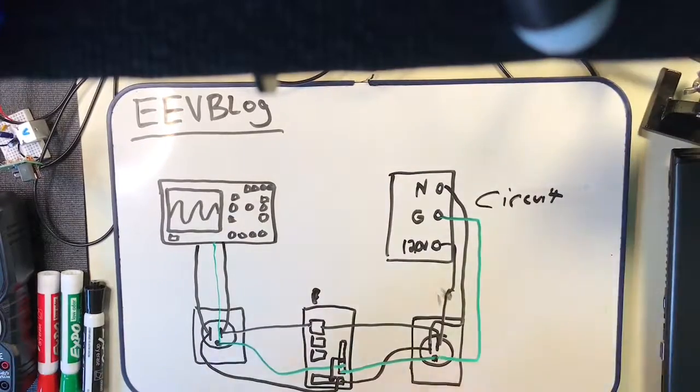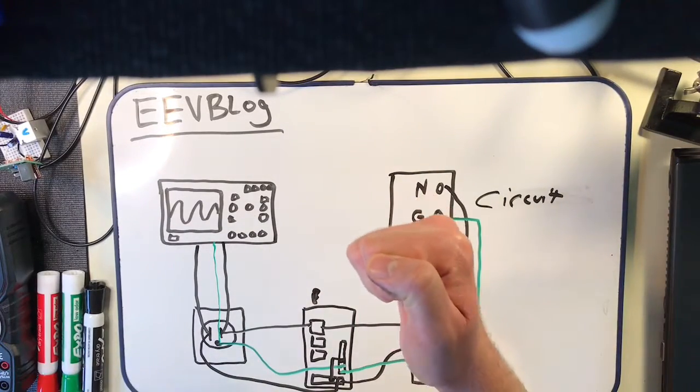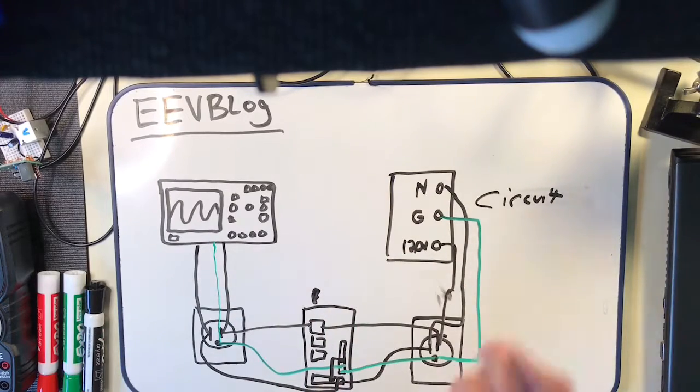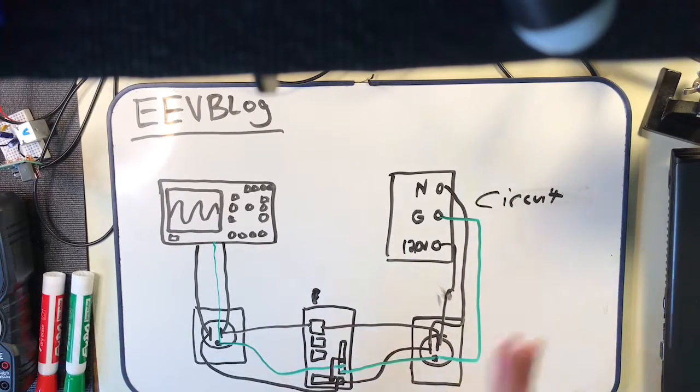So if you were to take a power strip, for example, with the power off and plug it into an outlet, and then probe between, do a resistance check between neutral and ground, there will be a very low resistance. Because in the breaker panel these are connected to each other. So effectively the neutral and ground are at the same potential.